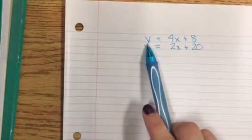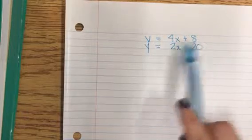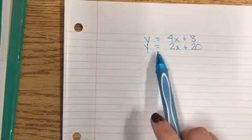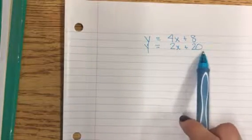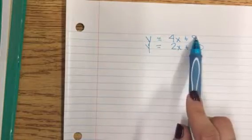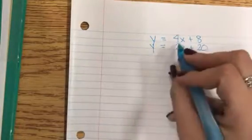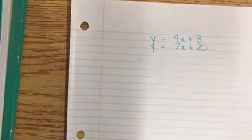We should be able to look at this and say, okay well I know that y is equal to 4x plus 8 and I also know that y is equal to 2x plus 20. So if y equals 4x plus 8 and y equals 2x plus 20, then it should also be the case that 4x plus 8 is equal to 2x plus 20, and that would be a true statement.